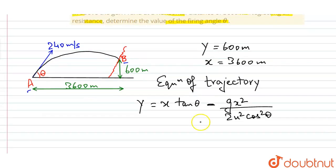Now on putting the values, Y is 600 and X is 3600 tan theta minus G, which is 9.8, the acceleration due to gravity.